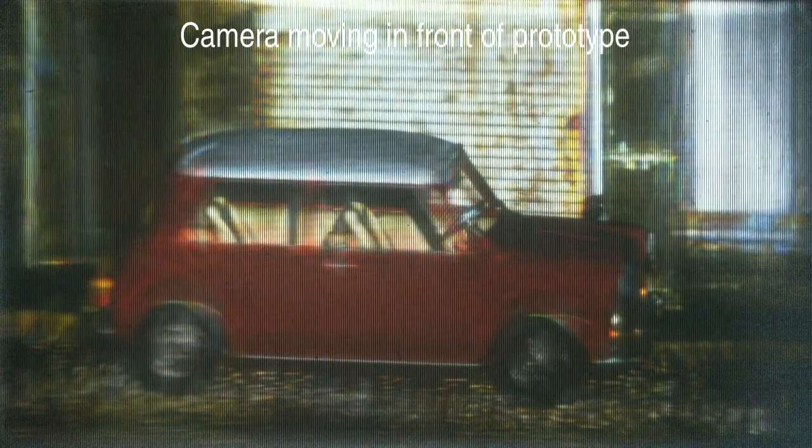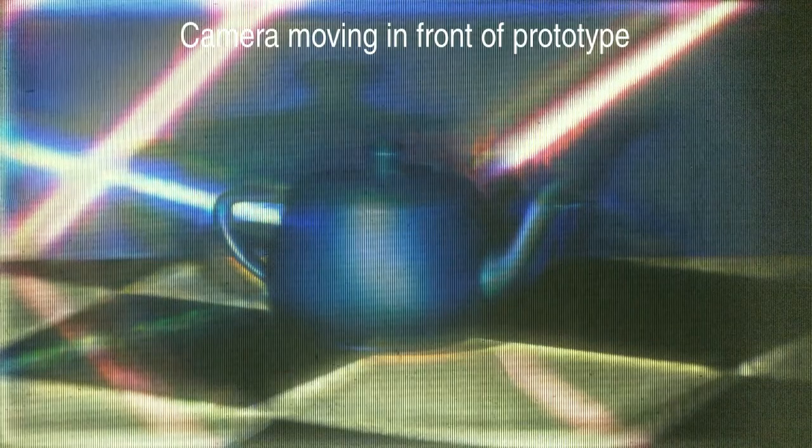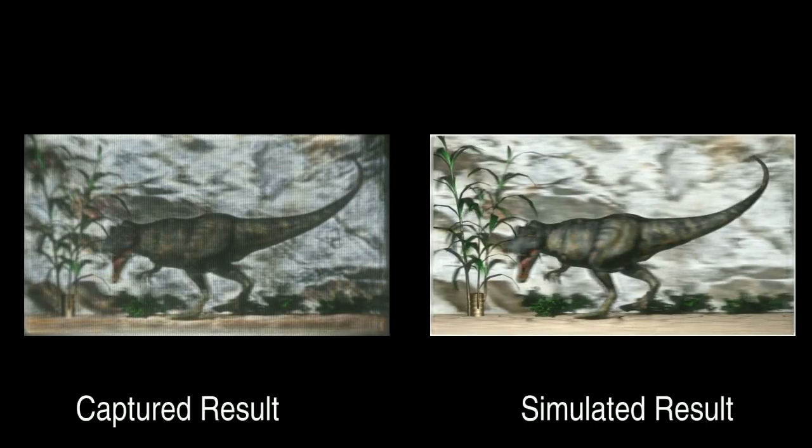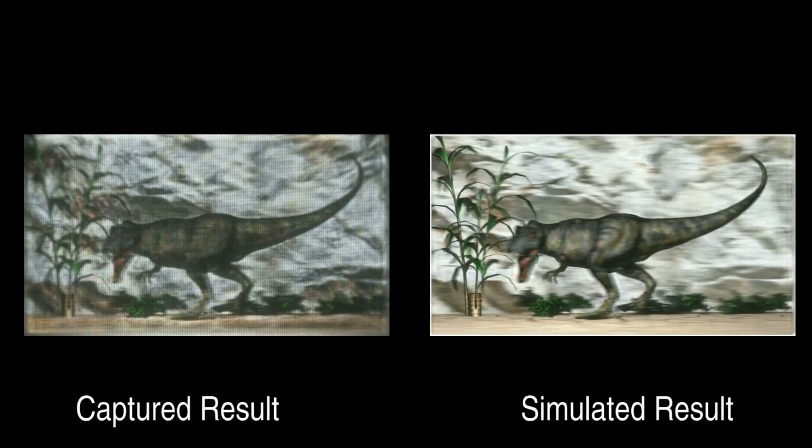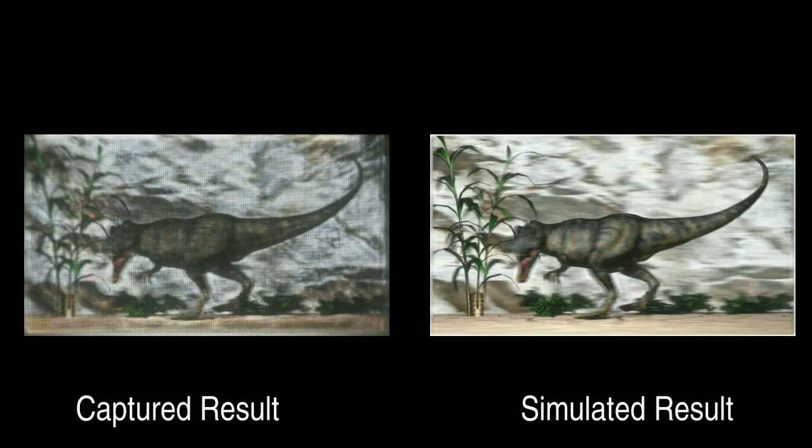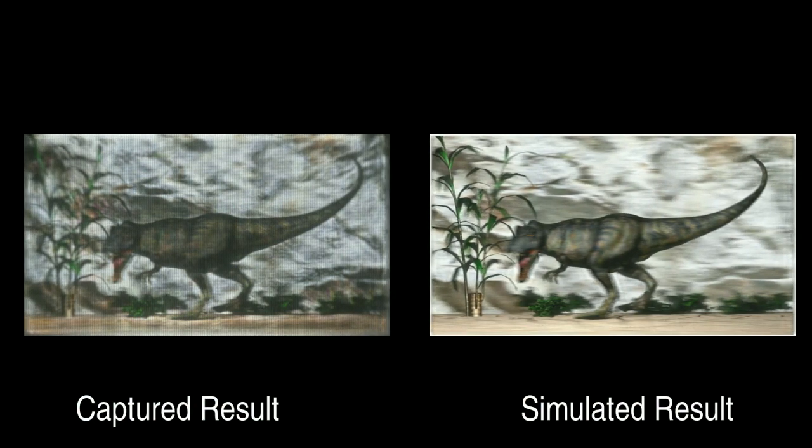Here is another result captured from the prototype screen. Our projector currently supports grayscale images only. Color images are composed by capturing each color channel separately and compositing them. Simulations predict the observed image quality well. Our solver partially compensates for aberrations of the screen, limited contrast of the SLMs, and other effects.